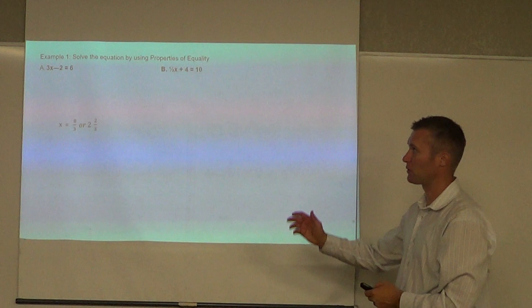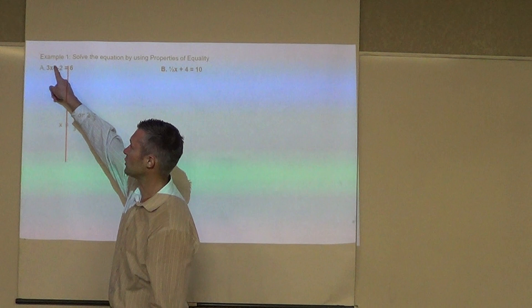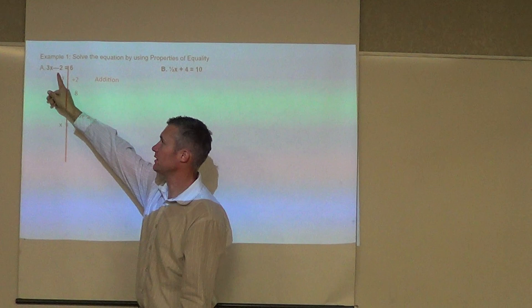So we're going to go through and solve an equation. First thing we're going to do is draw a line. Now we have two sides of the equation. Our goal is to try to get x by itself. So in order to get rid of two, since we're subtracting two, I need to add two. Well, if I add two on this side, I've got to add two on that side. So these twos would cancel off. Six plus two is eight.